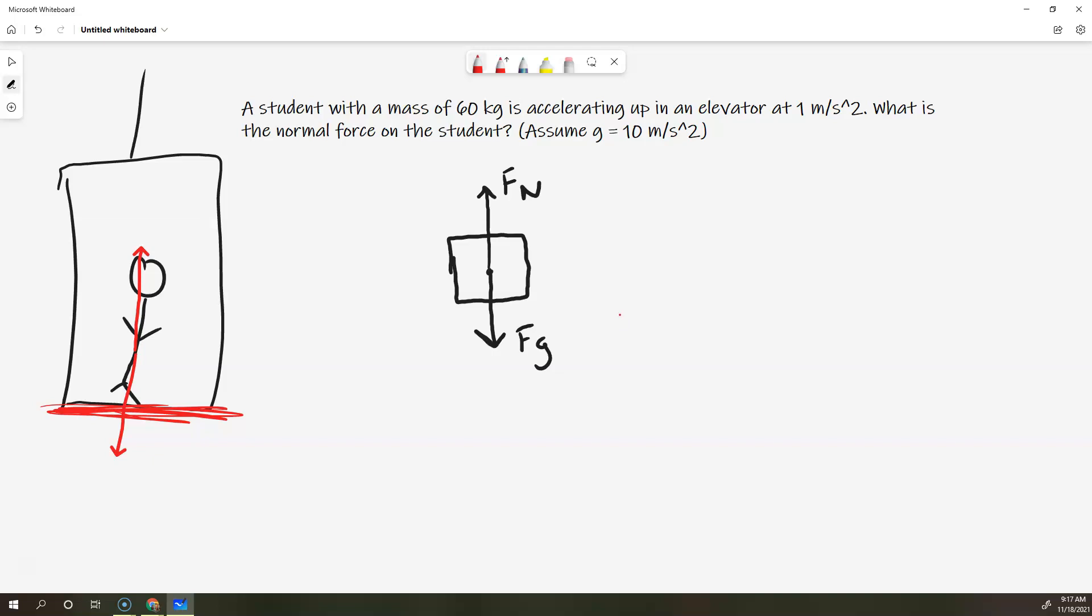Now, what we're going to do is we're going to read the question again, and we're going to see if there's any values we can assign to anything. So, we know we have a mass of 60 kilograms. We know we're accelerating up, so what I like to do on my free body diagrams, but next to them, is I like to just say, A is in this direction, if I know it.